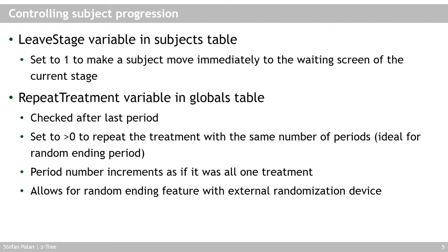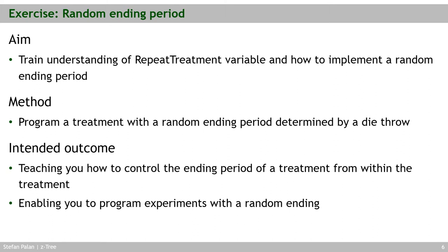Using a physical randomization device like a die has turned out to be more believable to subjects. If you ask subjects whether they trust random number generators on computers, many usually don't trust them. But if you use a physical die they're more likely to believe the randomization was genuine. There is an exercise where you should learn to implement the random ending period, programming a treatment where the ending is determined by a die throw.